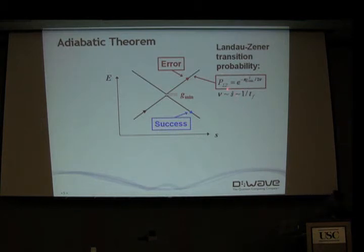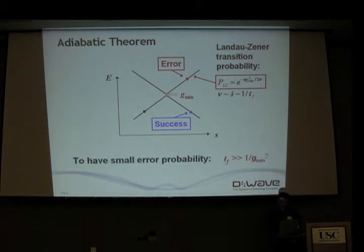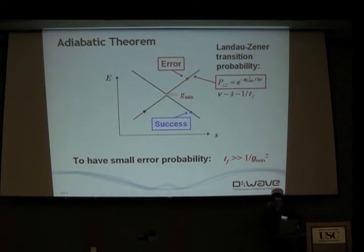If the sweep is linear with time, you can replace 1 over tf — the speed of evolution — in the exponent to get a criterion for making the error small. The total evolution time should be much larger than 1 over gap squared. This is what we call the adiabatic theorem.